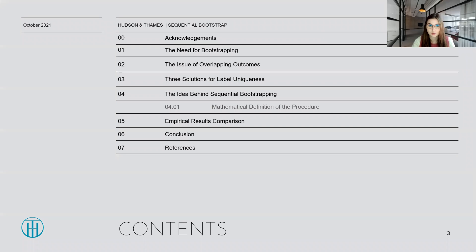During the course of this presentation we're going to be talking about the need for bootstrapping, the issue of overlapping outcomes, as well as the three solutions for labeled uniqueness tests. Most of the time we're going to be talking about the sequential bootstrap and the idea behind it, as well as the mathematical definition of the procedure. We're also going to show the empirical results comparison between the sequential bootstrap and regular bootstrap, as well as wrap everything up with the conclusion section. All references to sources used for this presentation will be listed in the respective slide at the end.